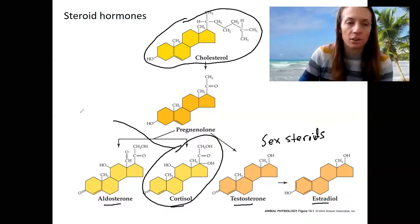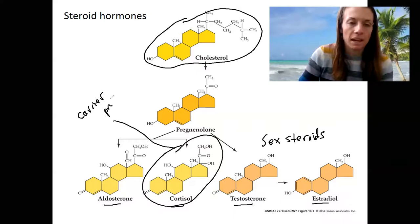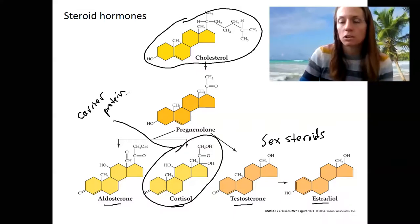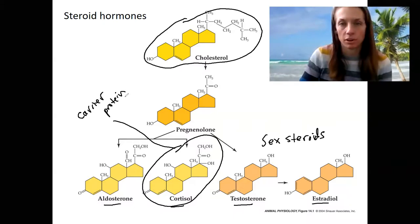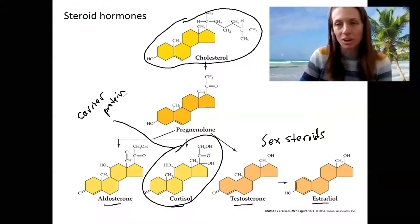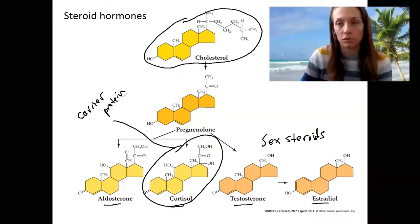So it needs a carrier protein, all these do, to be happy traveling in the blood. So you'll see sometimes with blood values of the clinical values of steroid hormones, as well as thyroid, there's bound and unbound values, whether it's bound to the carrier protein or not.